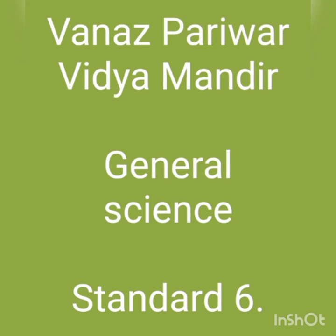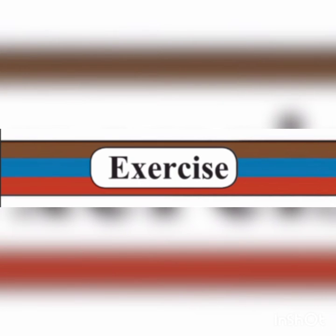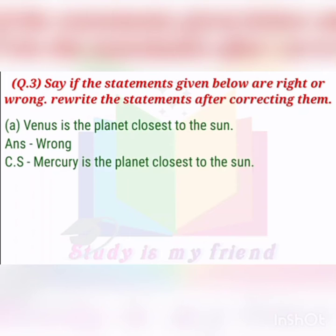Good afternoon students. Today, universe lesson number 16, we will continue with our exercise part. Question number three: say if the statements given below are right or wrong. Venus is a planet closest to the sun.